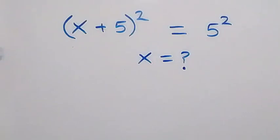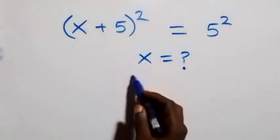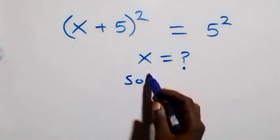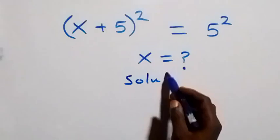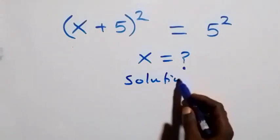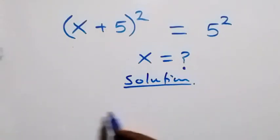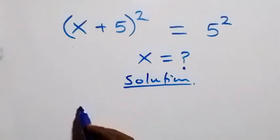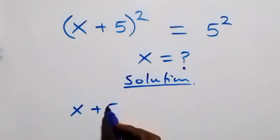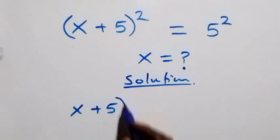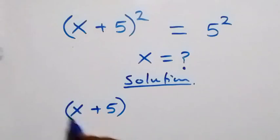Hello, you are welcome. How to solve this nice algebra problem — let's use two methods. For the first method, what we have is x plus five, all squared.